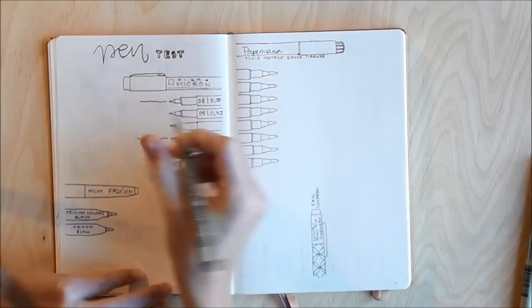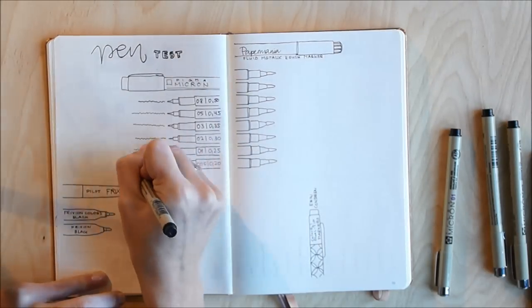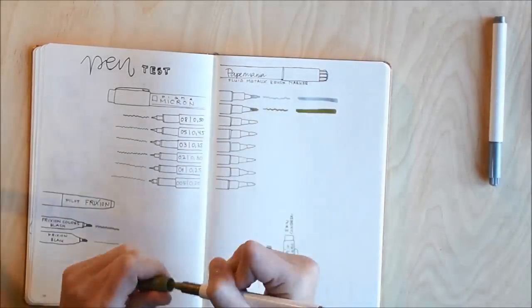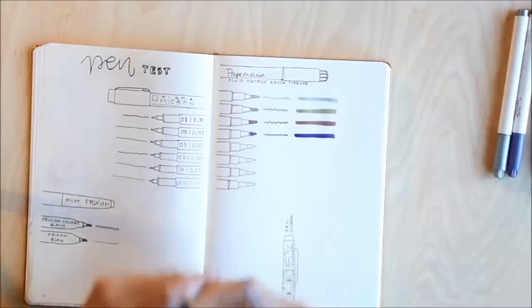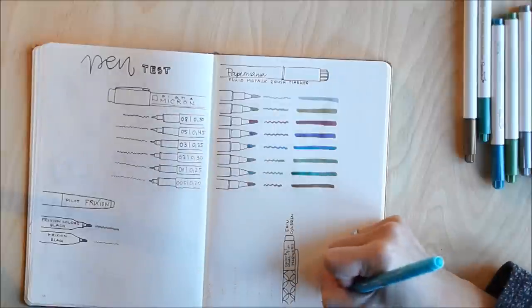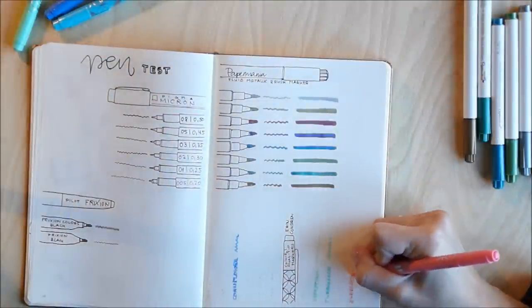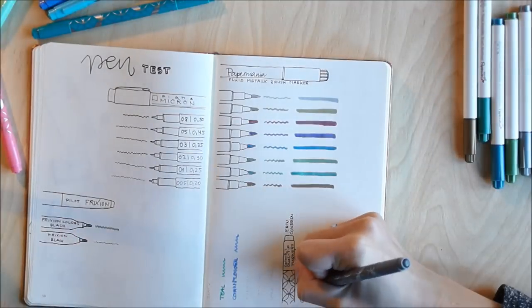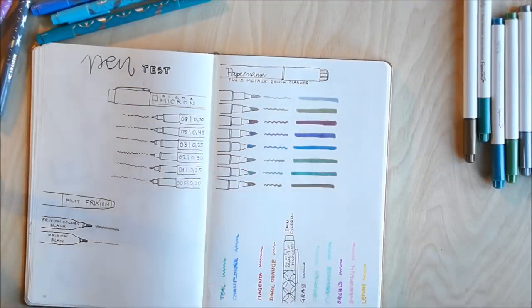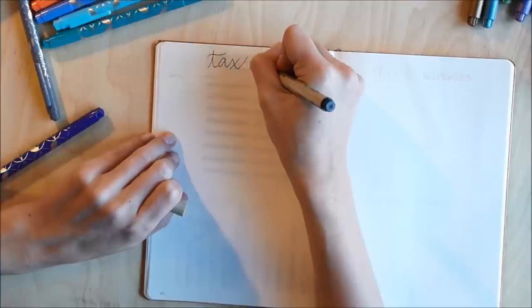And then I basically went in and for the Microns I wrote down the number and the thickness and made a little squiggly line. And for the FriXions and the Paper Mania pens I colored in the tips and again made some lines. With the metallic brush markers I added thinner squiggly lines and thicker strokes. And for the Erin Condren dual tip markers I wrote out the name in the according color. And those are the pens that I'm currently using in my bullet journal. While making this voiceover I just bought some Tombows which I will add in on this page as well at some point.